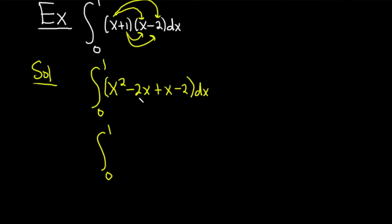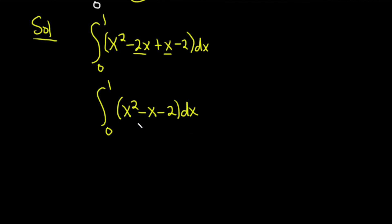So this is the definite integral from 0 to 1. We can combine some terms here. We've got a -2x and a positive x. That's going to become -x. So this is x² minus x minus 2, and then we have a dx.